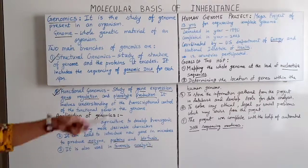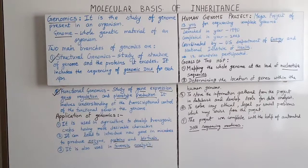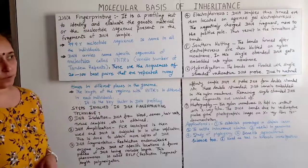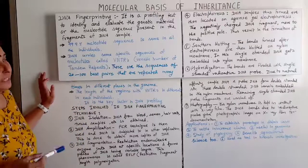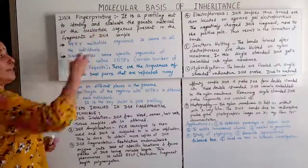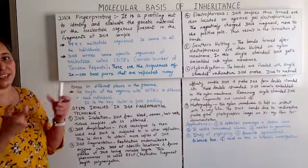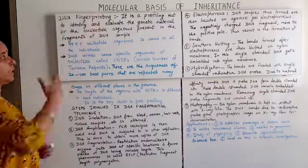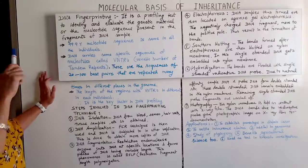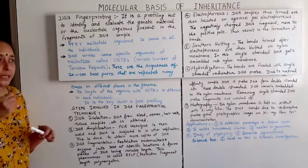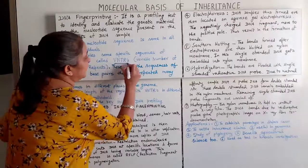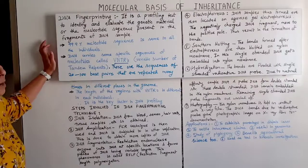Applications of genomics are important, and the goals of the human genome project are sometimes asked for 3 marks in board exams. DNA fingerprinting is a profiling test to identify and evaluate the genetic material or nucleotide sequence present in a fragment of a DNA template. About 99.9% of nucleotide sequences are the same in all individuals. DNA carries specific sequences called VNTR — Variable Number of Tandem Repeats.